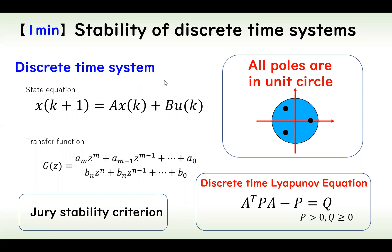In a discrete time system, when all poles are in the unit circle, the control system is asymptotically stable. The poles are the eigenvalues of A and the roots of the polynomial of this equation.